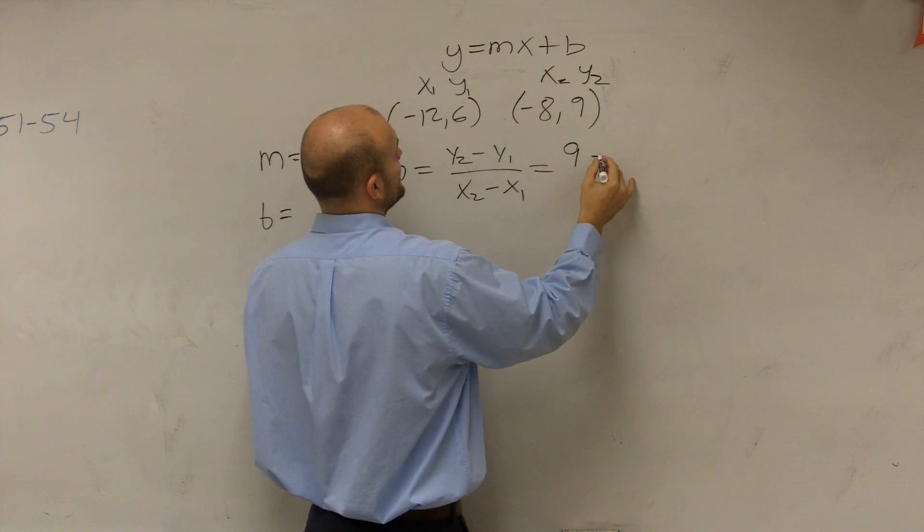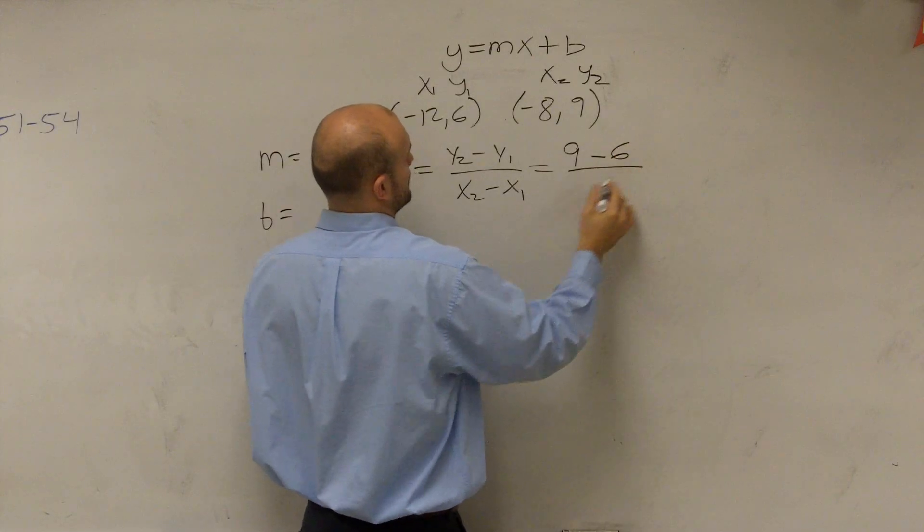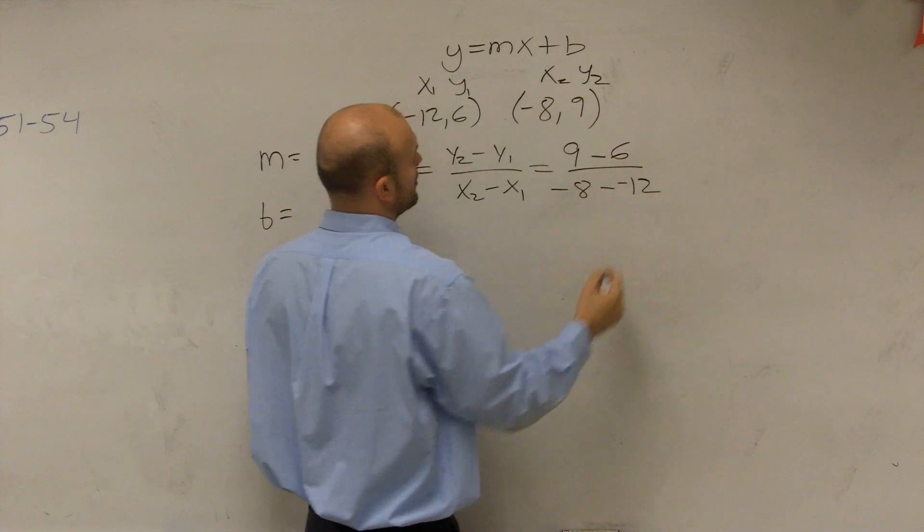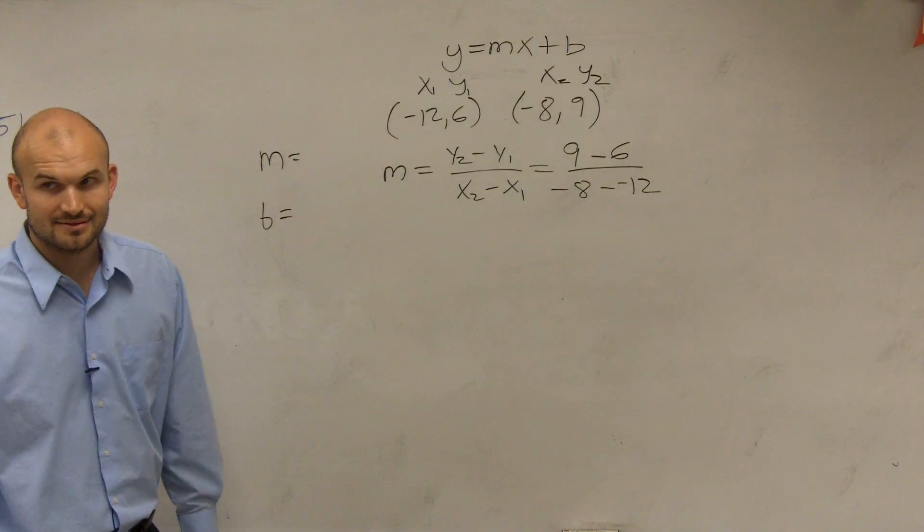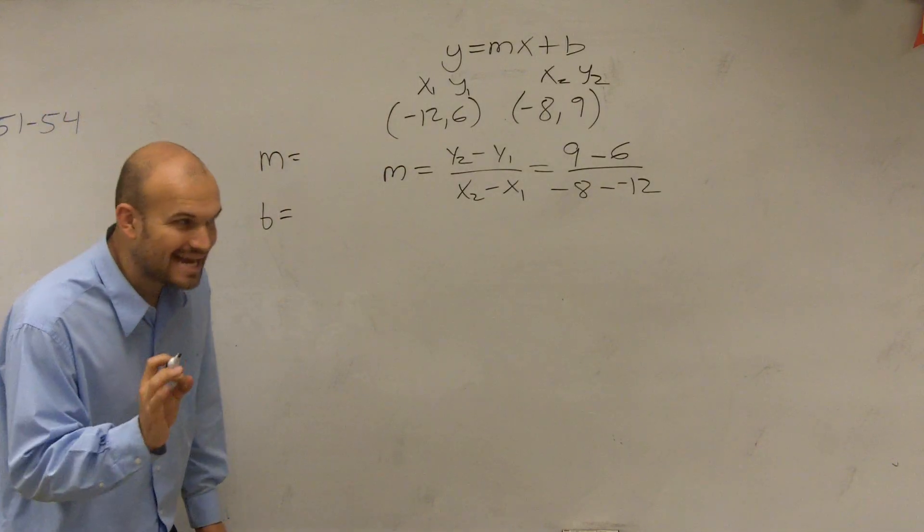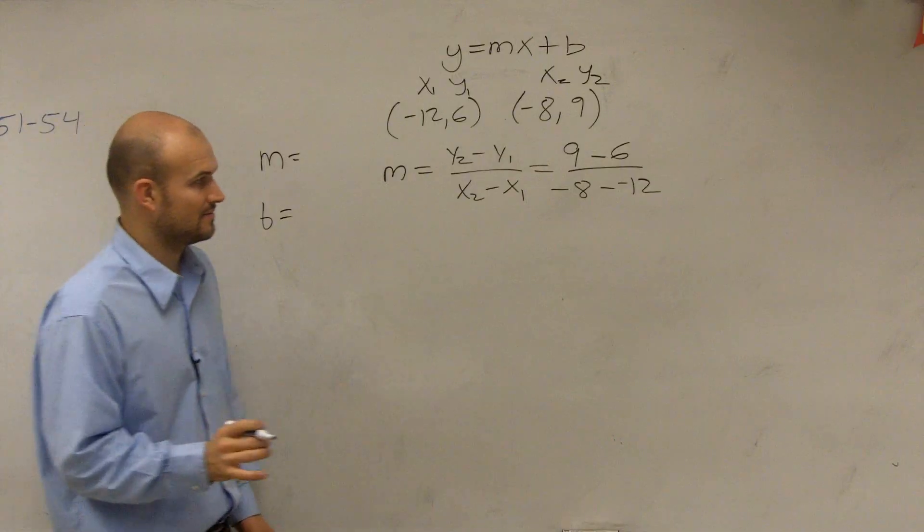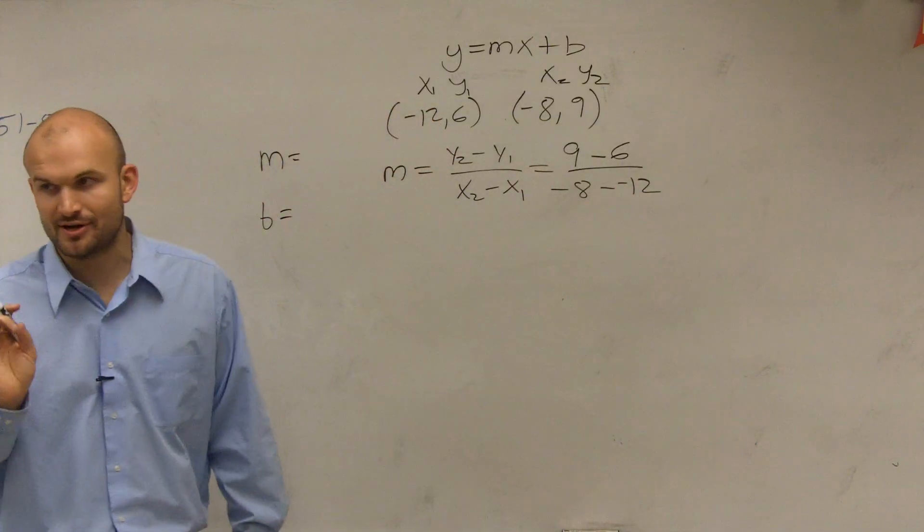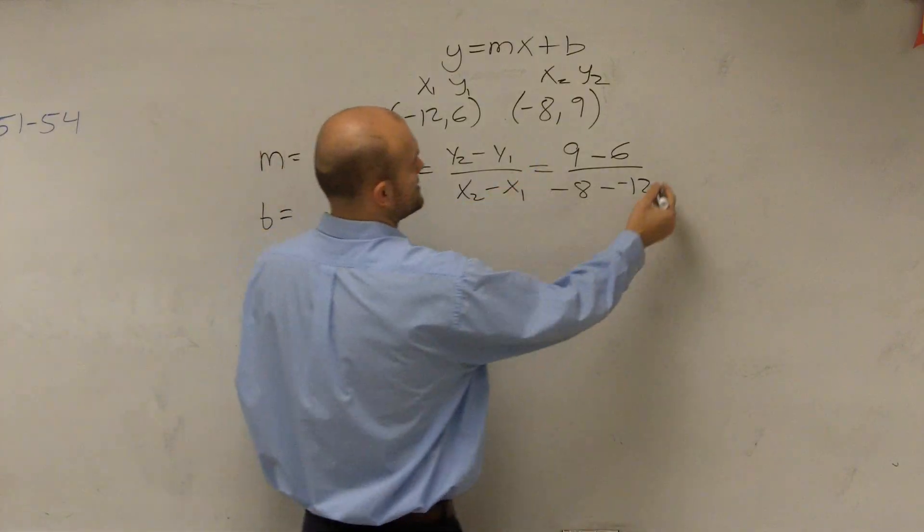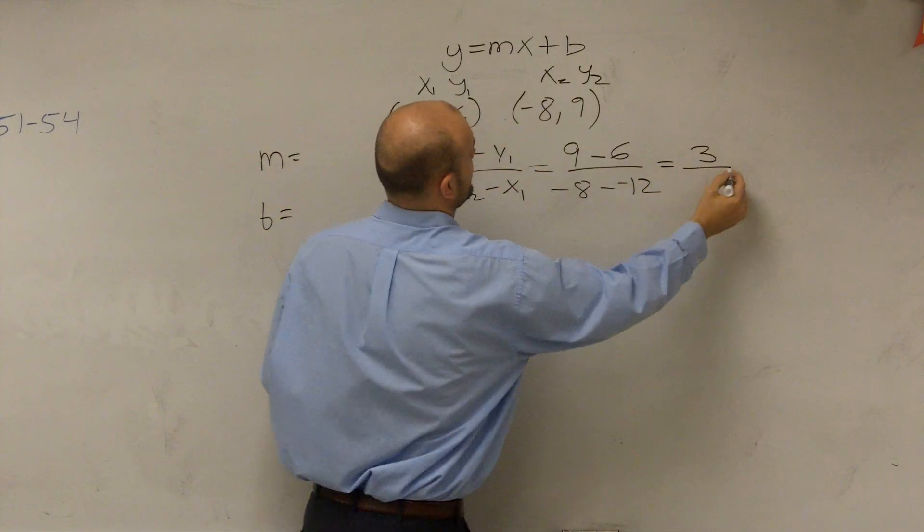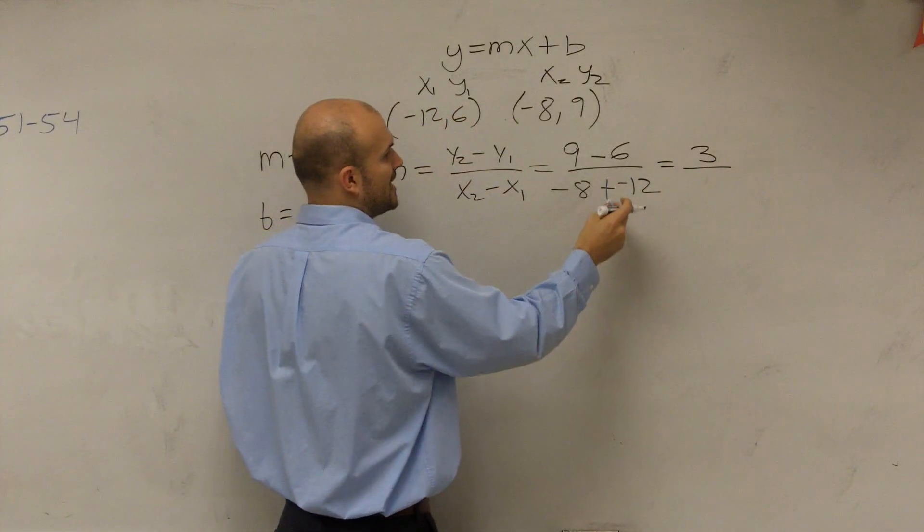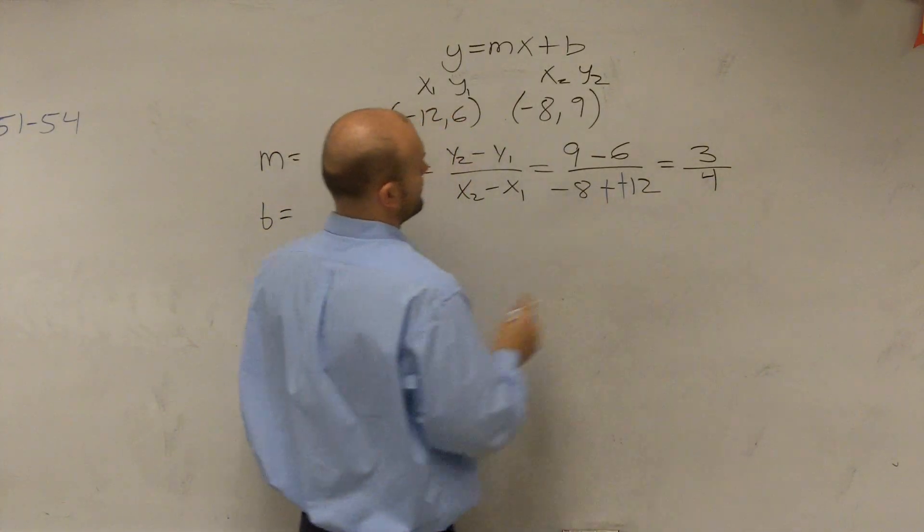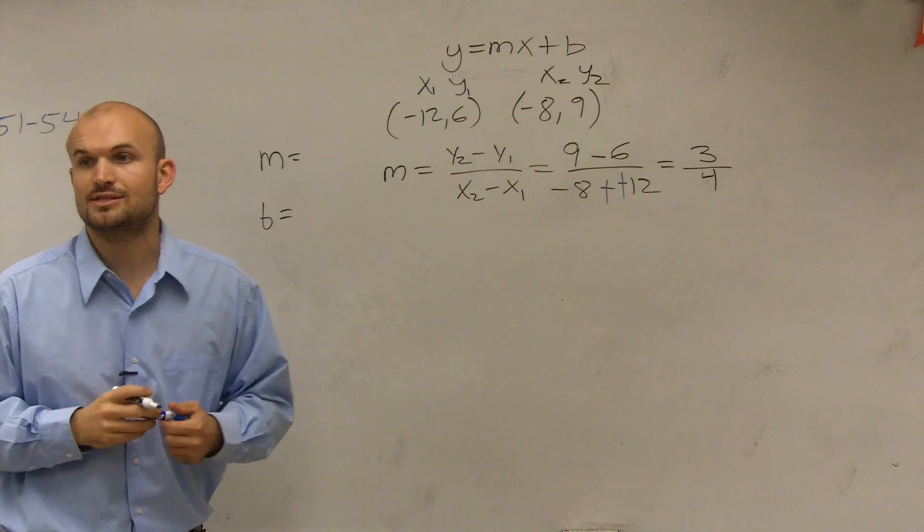So 9 minus 6 over negative 8 minus negative 12, right? You guys have to be very careful when you do this. So 9 minus 6 is 3. Negative 8 minus negative 12, that double negative, is going to be 4. So now do we know what the slope is? Yes.